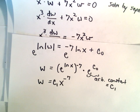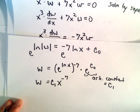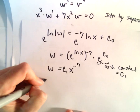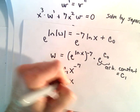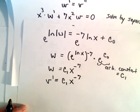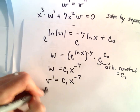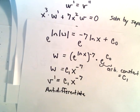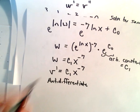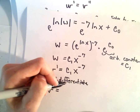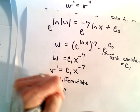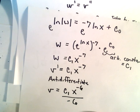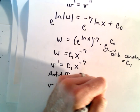So now we have simply that w equals c sub 1 times x to the negative 7. Using the fact that w equals v prime, we've got v prime equals c sub 1 times x to the negative 7. Now we anti-differentiate. On the left we'll be left with v, and on the right we'll have c sub 1 times x to the negative 6 divided by negative 6, plus a new constant c sub 2.